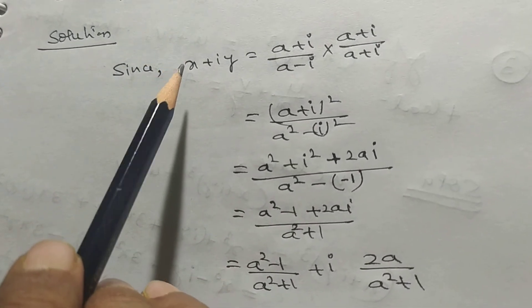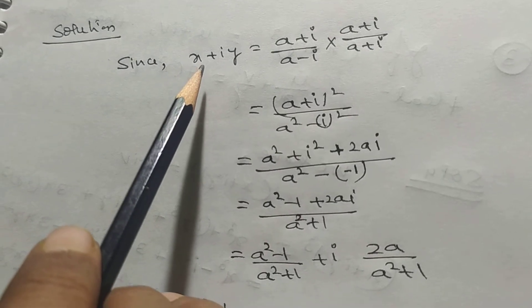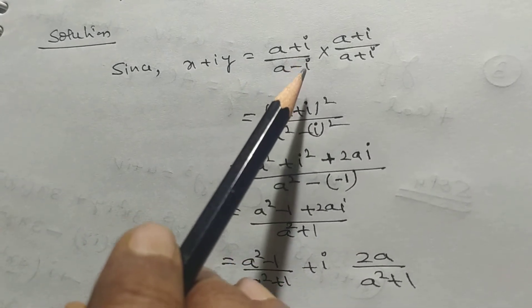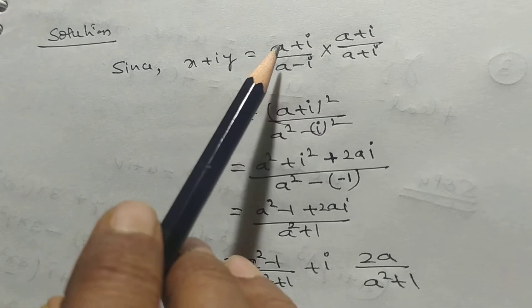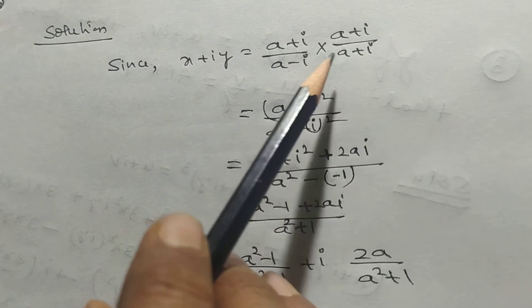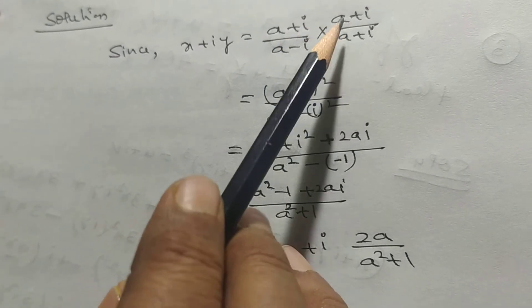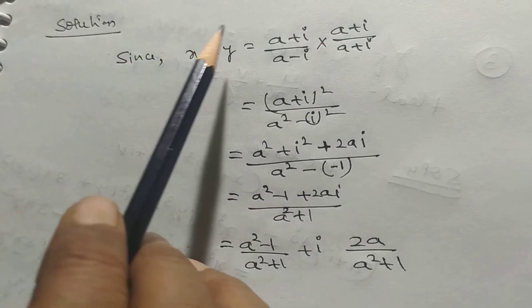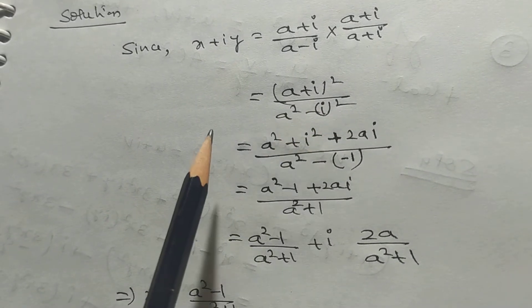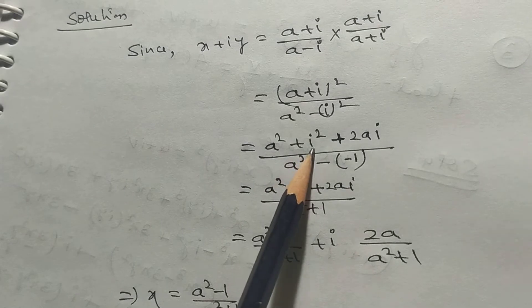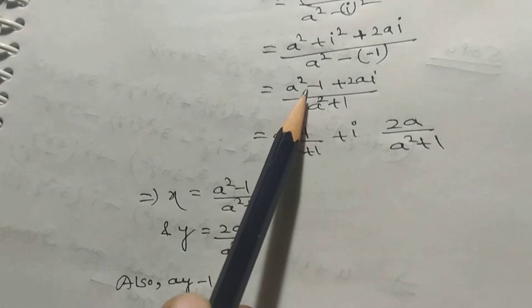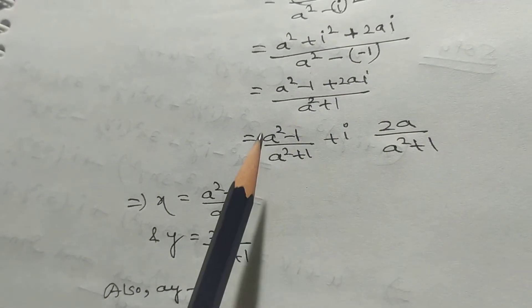The first step you will take is to solve the problem by multiplying the conjugate of the denominator. Here the problem is (a+i)/(a-i), and the conjugate of (a-i) is (a+i). So we will multiply by (a+i)/(a+i). It will be (a+i)² in the numerator and a²-i² in the denominator, giving a²+i²+2ai over a²-(-1).